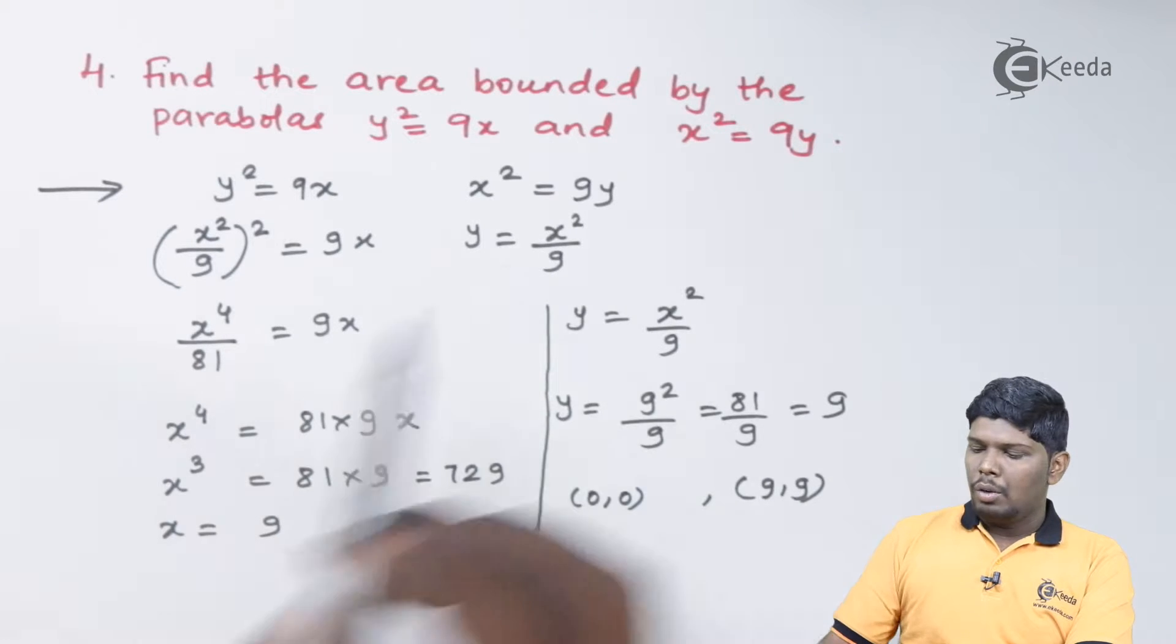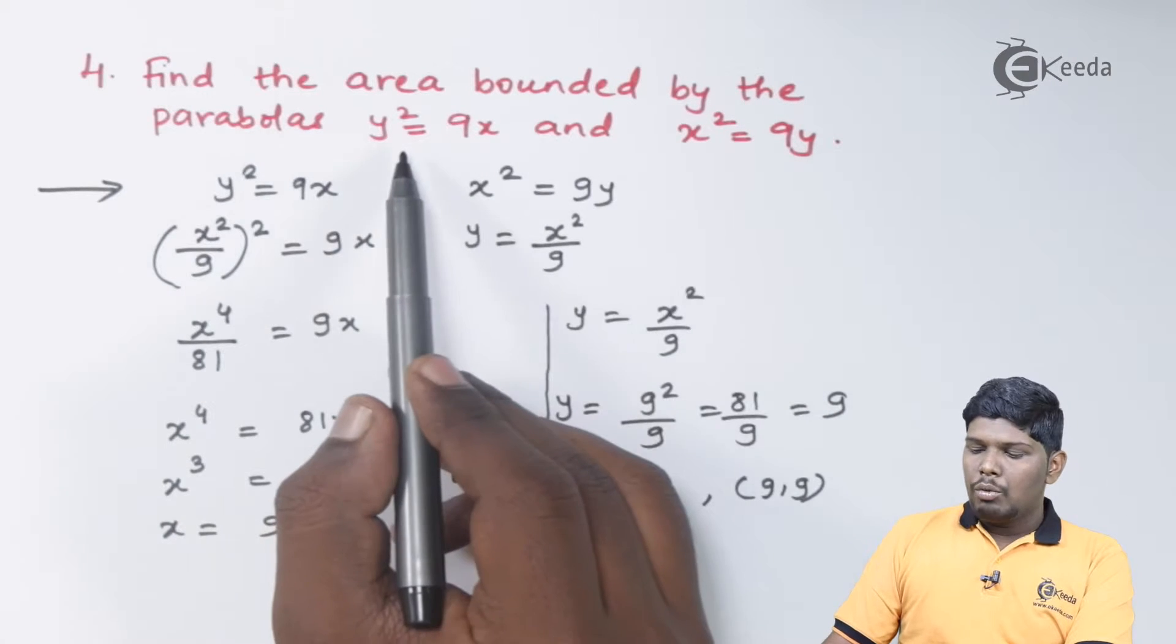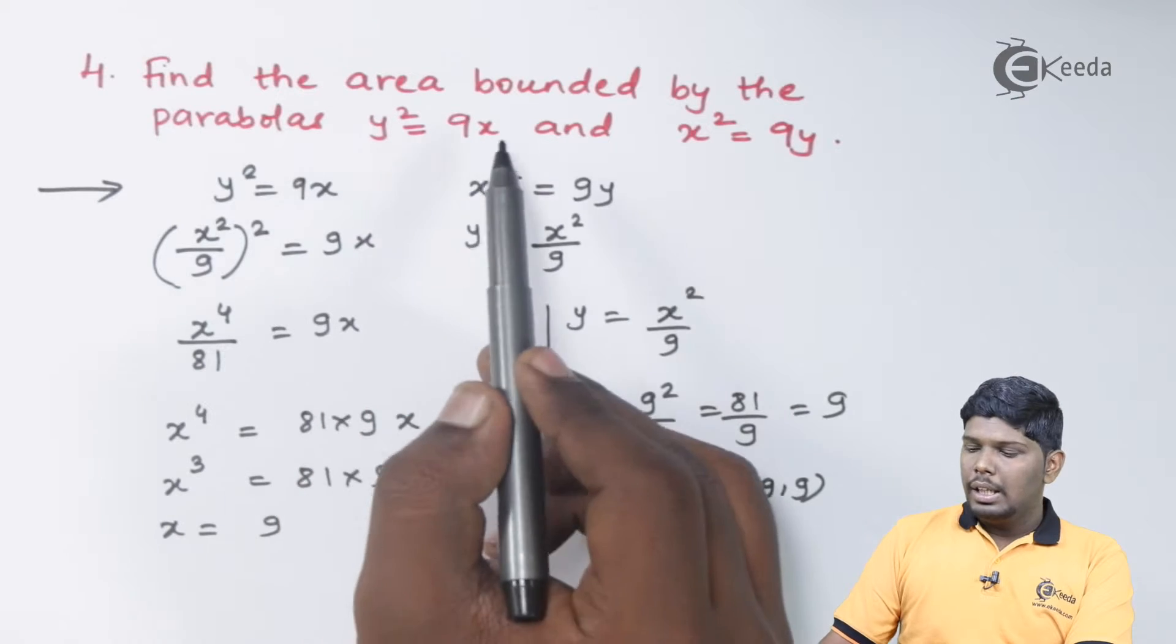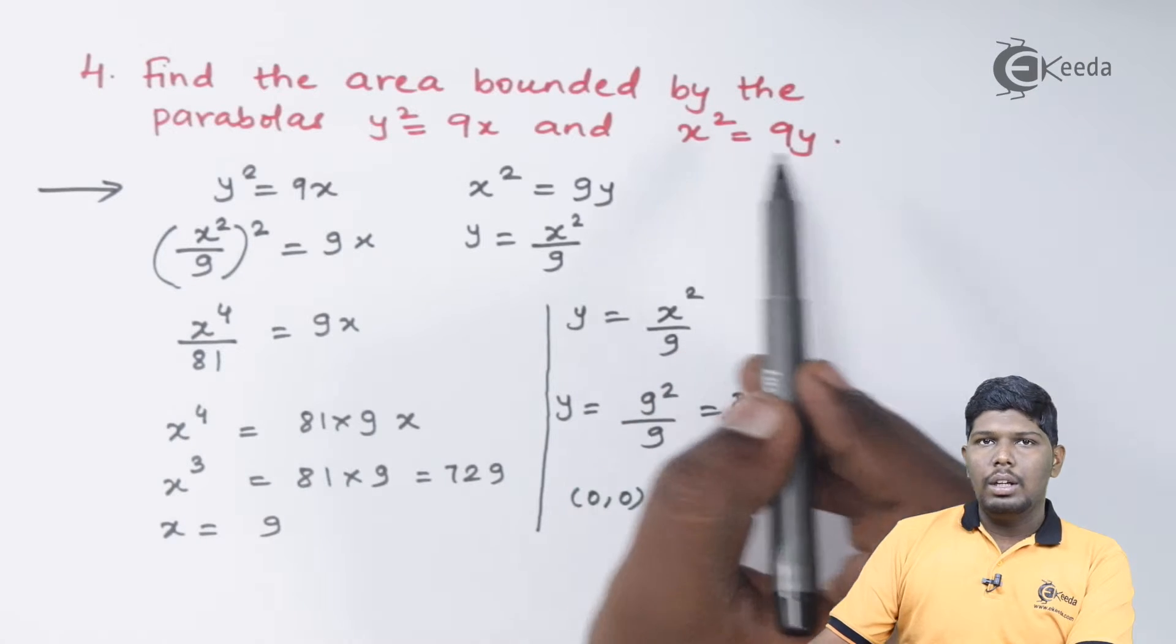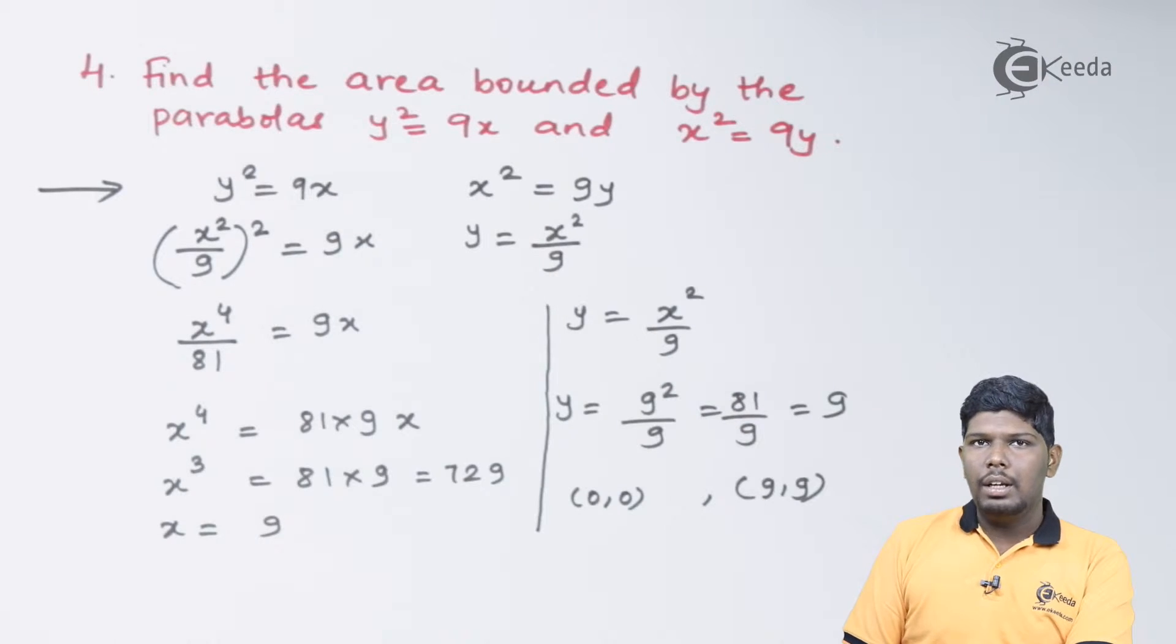Now let us draw the graph of the two parabolas. Out of that, the first parabola, the minimum power is with x and x being positive, the parabola will be in positive x axis direction. And in the second parabola, the minimum power is being with y, the parabola will be in positive y direction.